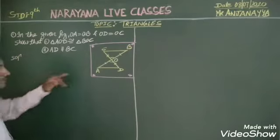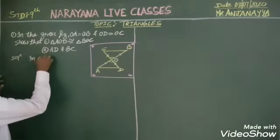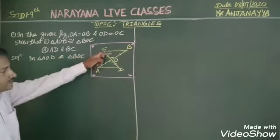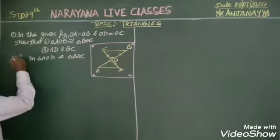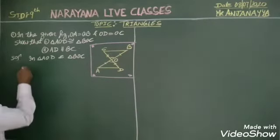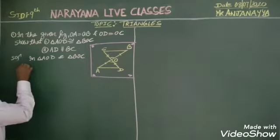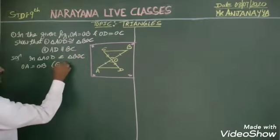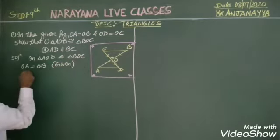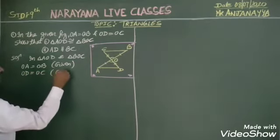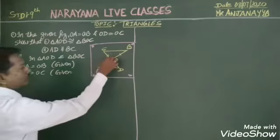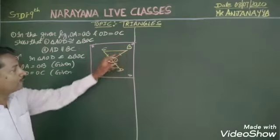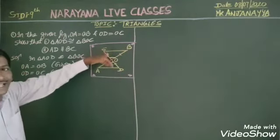In triangle AOD and triangle BOC, we know that OA is equal to OB — this is given to us. Then OD is equal to OC — this is also given to us. And we know these two angles, angle AOD and angle BOC, form vertically opposite angles.